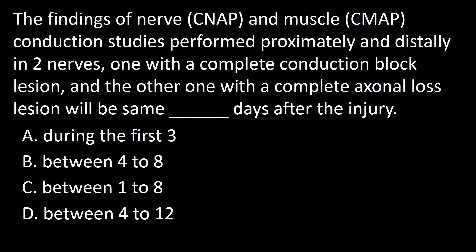Next question: the findings of compound nerve action potential and compound muscle action potential conduction studies performed proximally and distally in two nerves — one with complete conduction block and the other with complete axonal loss — will be the same, dash days after injury. A: During the first 3, B: Between 4 to 8, C: Between 1 to 8, D: Between 4 to 12.